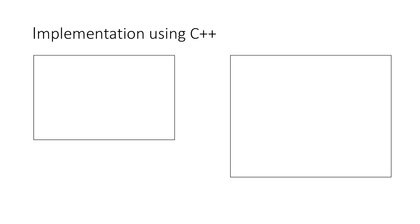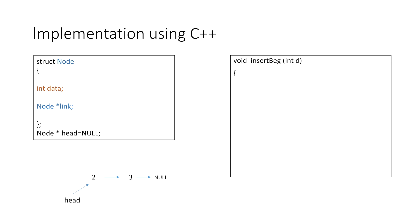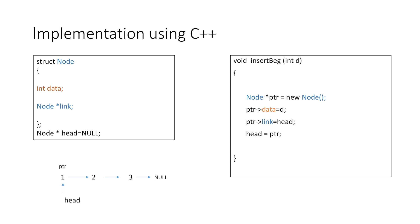Now let's quickly write the code using C++. We make a function which takes integer d as argument, which is the data to be copied in the data part of our node. We create a new node using the new operator and return its starting address to the pointer ptr. We copy the value d into the data part. Next, we store the value in head in the link part of our newly created node. Finally, we set head = ptr, pointing the head pointer to our newly created node, which will now be the starting of our linked list. We are done with our program to insert a node at the beginning of a list.